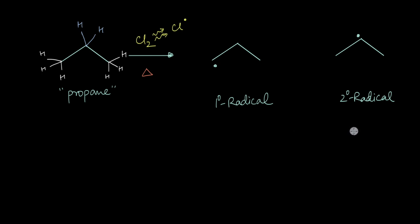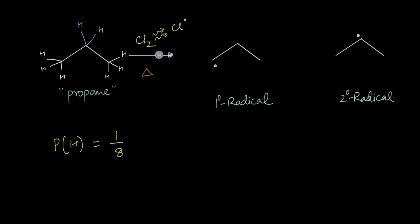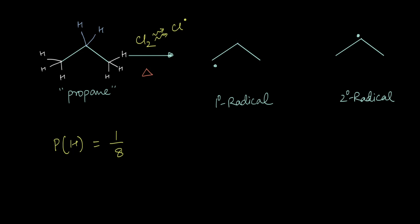If we look at it purely statistically and assume the chlorine radical is equally likely to abstract any hydrogen atom from propane — since there are eight hydrogen atoms — the probability of abstracting any one hydrogen is 1/8. Because six of these hydrogens are at the ends, the total probability of forming a first-degree carbon radical is 6 × (1/8) = 6/8 = 0.75.